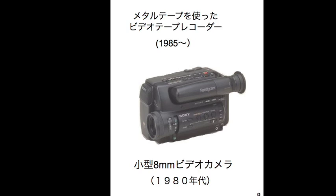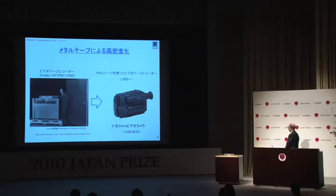The first small 8mm video cameras appeared in the 1980s. The video recorders originally developed by Ampex were very large, but Japanese technology achieved the miniaturization that allowed people to carry them easily. Metal tape invented around 1958 was not used for audio until after 1975, and not as video tape until after 1985. During that interval, I was searching for other approaches — wondering why it was not being adopted and whether there might be other ways of thinking.